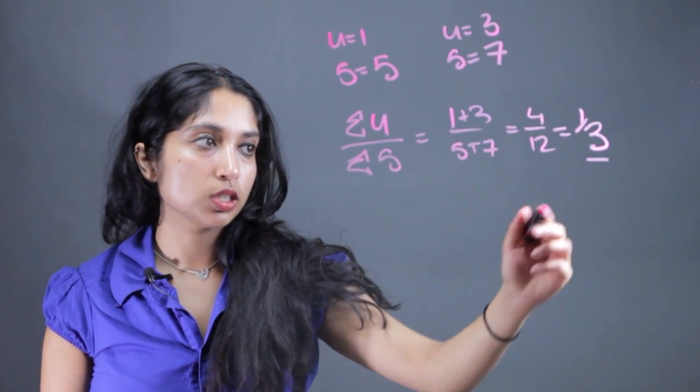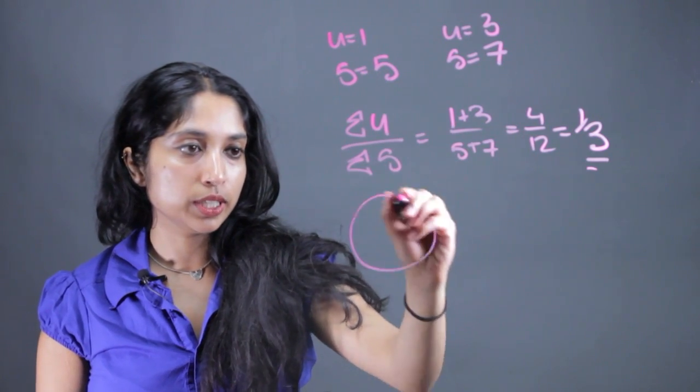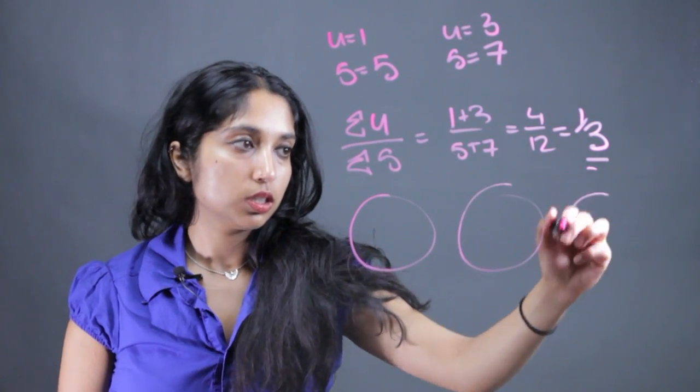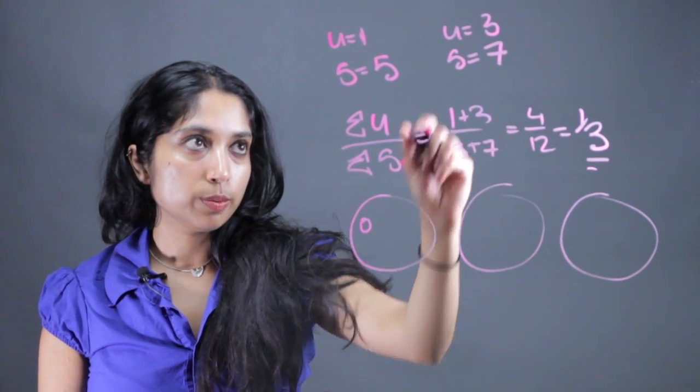And if we want to make equivalent fractions, we can just divide it into 1/3. So say we have 3 empty plates now. We would just rearrange the things we had here. So we would take 1 from here,